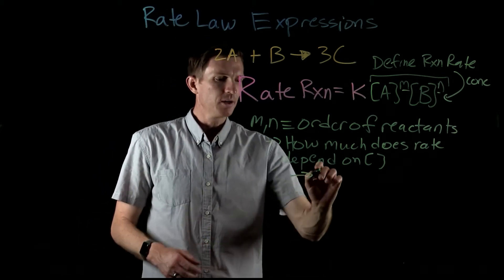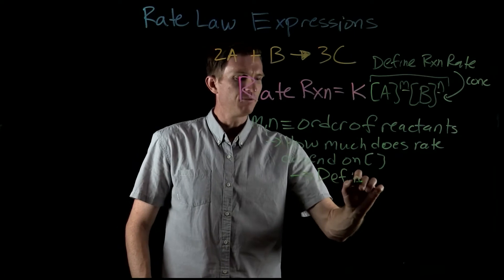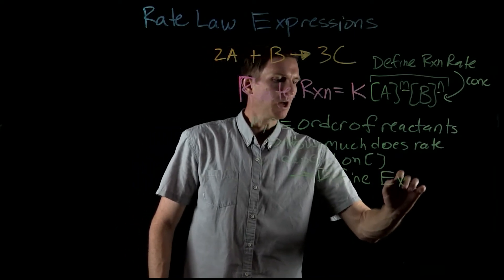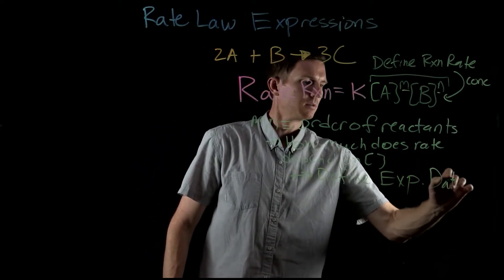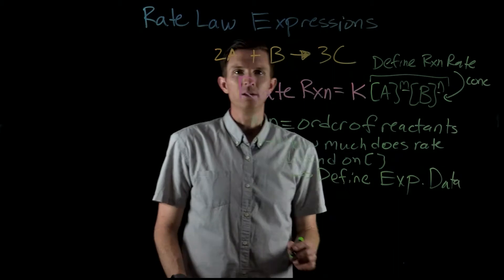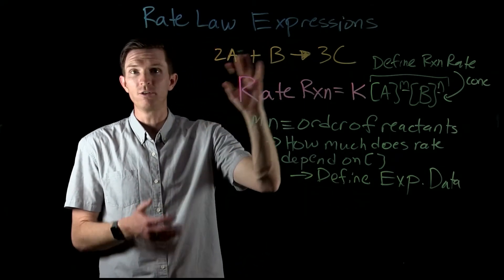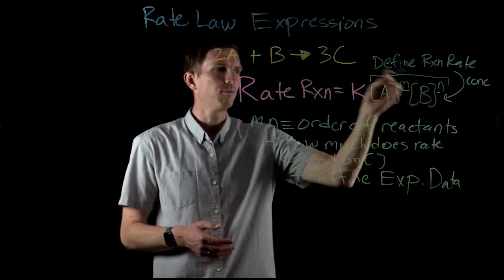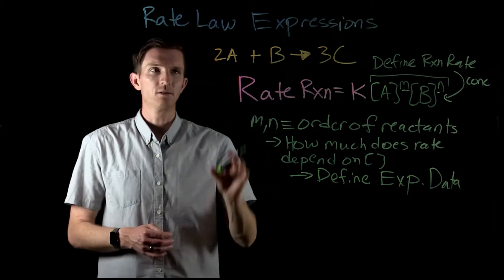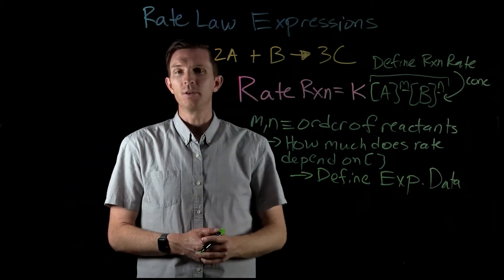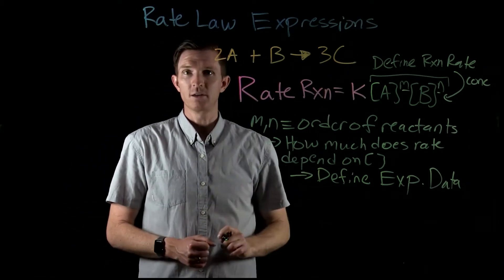Importantly, we define these orders from experimental data. We can't just look at our reaction and say the coefficient of A is two, therefore the order is two. The order has nothing to do per se with the stoichiometric coefficients of the overall reaction.